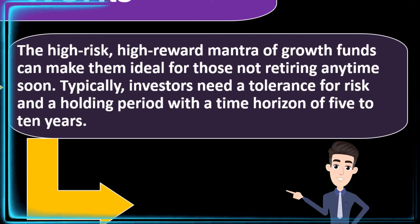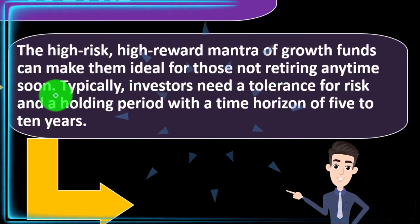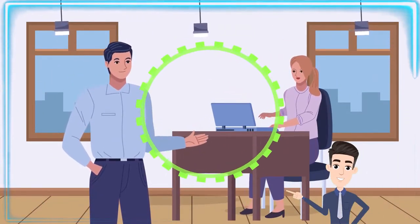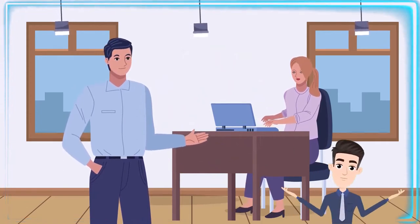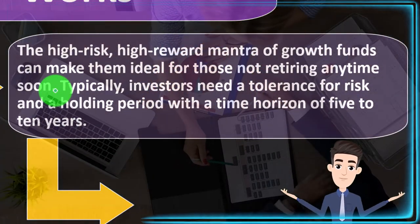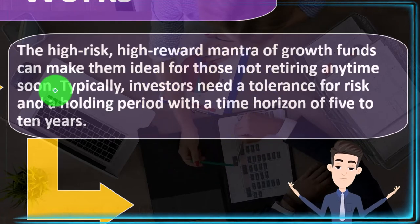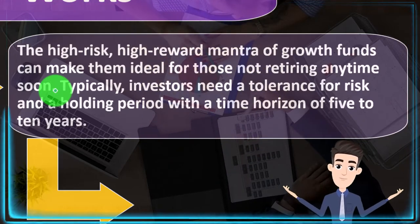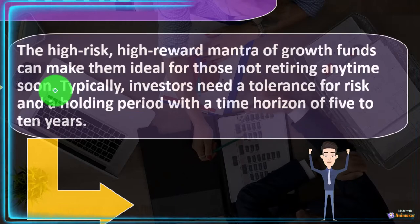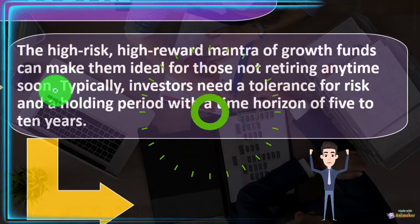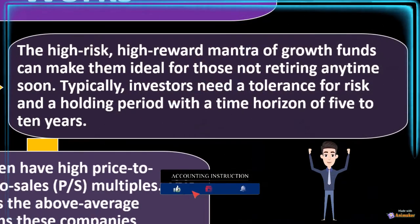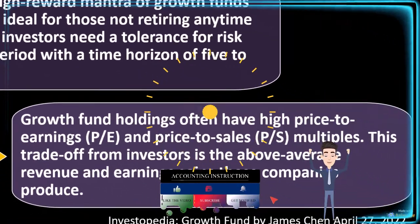How a growth fund works: the high-risk, high-reward mantra of growth funds can make them ideal for those not retiring anytime soon. When thinking about investment strategy, if we have a longer time horizon before hitting our end goal, we're more likely to allocate more to higher-risk areas. When we get close to the goal, we want less allocated to high risk, since we don't want to be caught on a downturn right before we need the money. Typically investors need a tolerance for risk and a holding period with a time horizon of five to ten years.